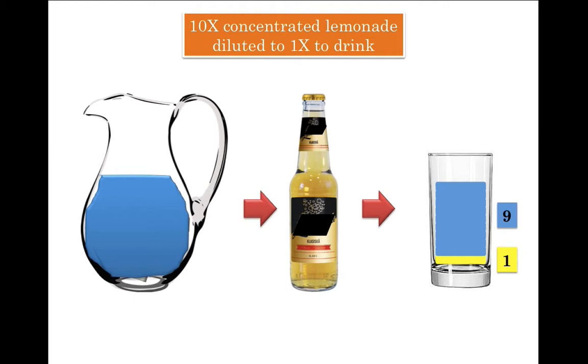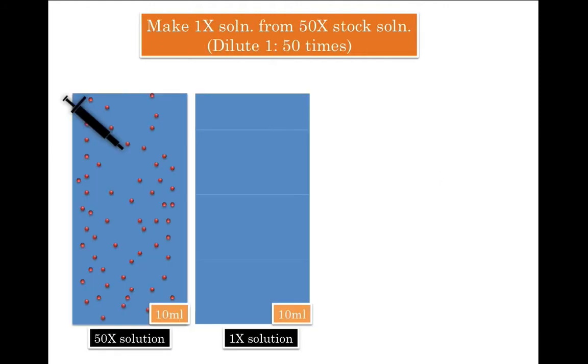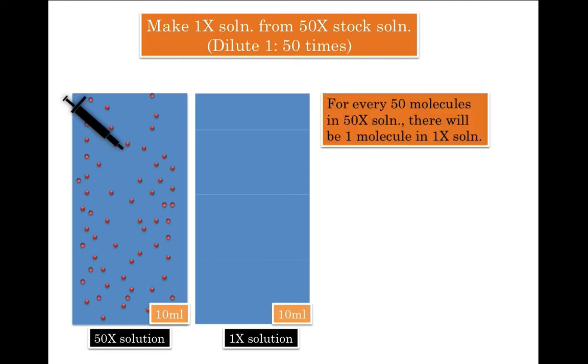Now let's imagine that you have 10 ml of 50X solution and you want to make 10 ml of 1X solution. So there is no difference in the volume here. Thus for every 50 molecules in 50X solution, there will be one molecule in 1X solution.